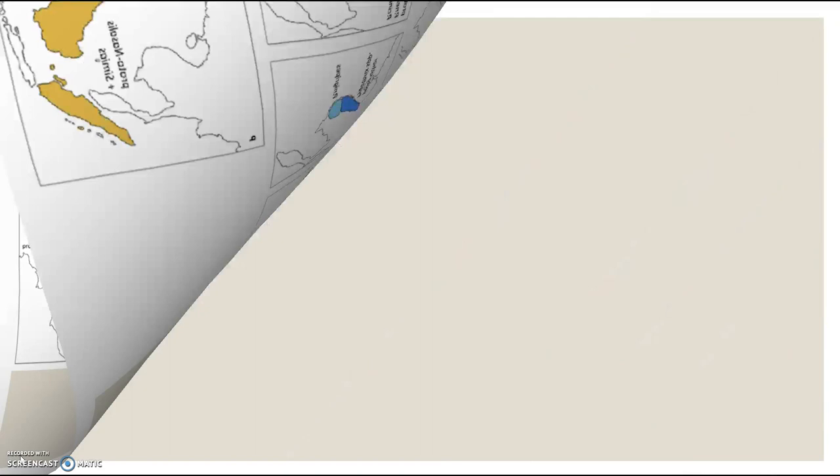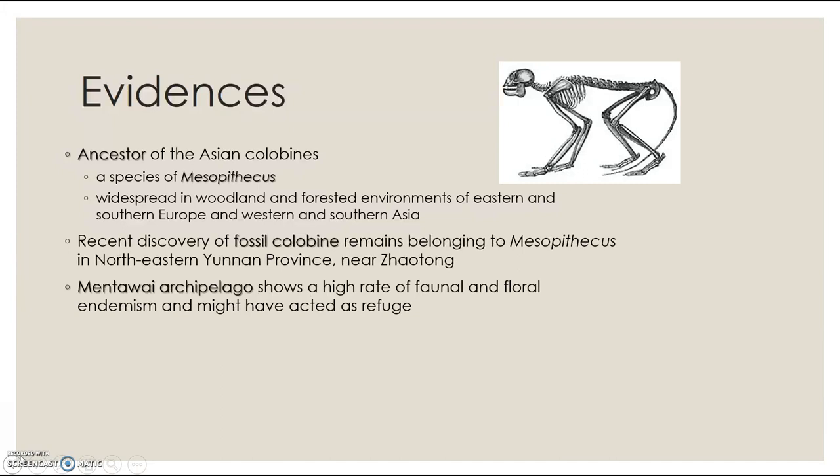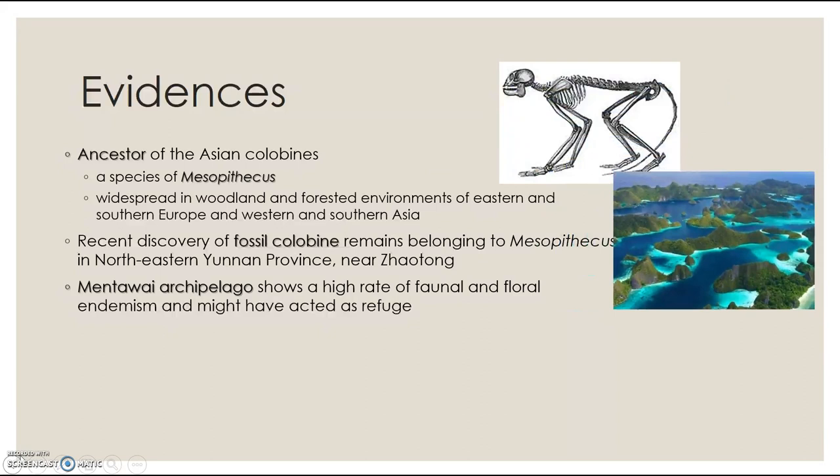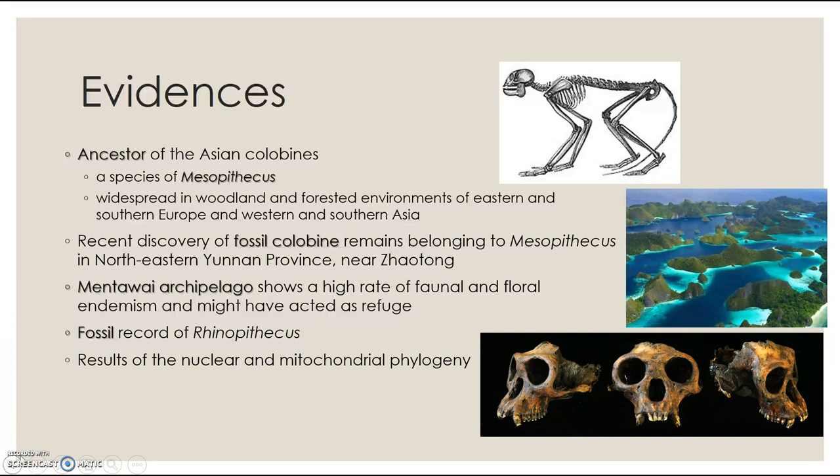The evidence includes: ancestors of Asian colobines were species of Mesopithecus found in Europe and Asia; a recent fossil found in Yunnan Province; the Mentawai Archipelago showing a high rate of endemism; the fossil record of Rhinopithecus; and the results of DNA phylogeny. This is the phylogenetic relationship among Asian colobines. That's all — thank you.